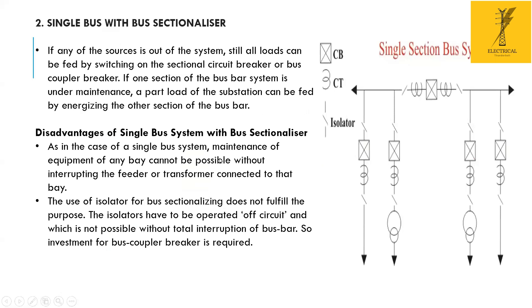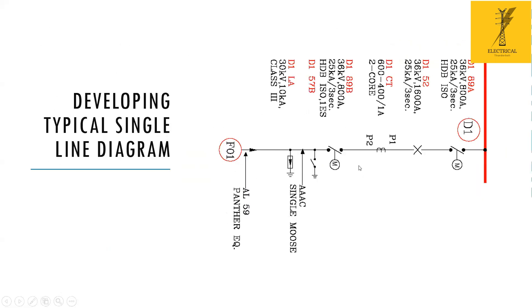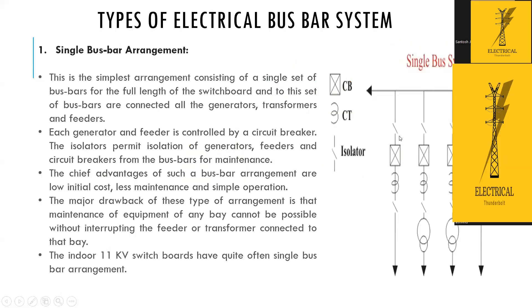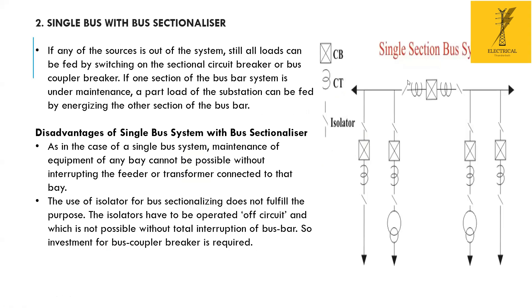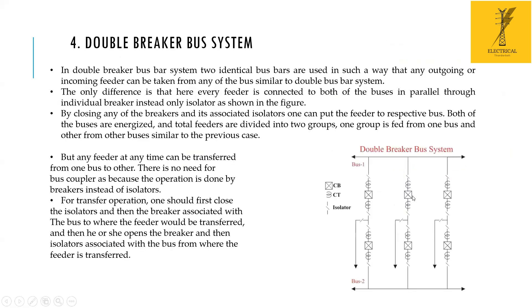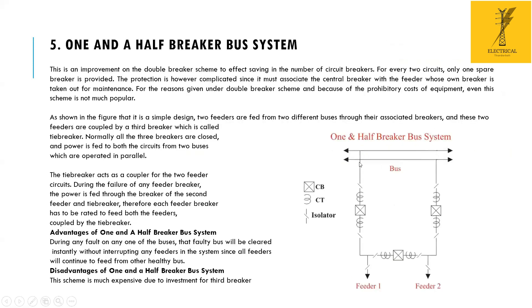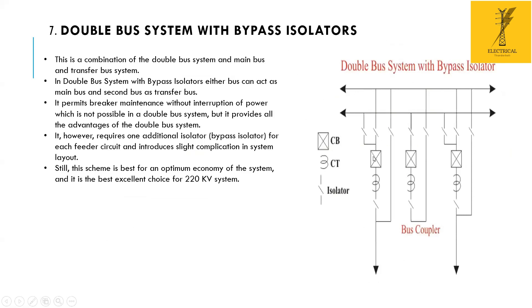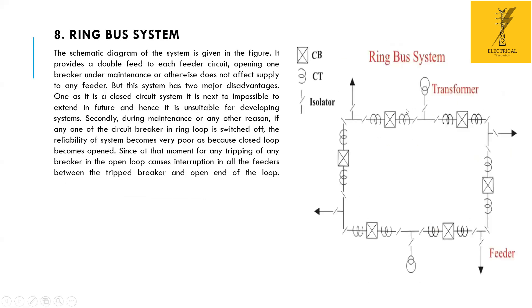So this is a single bus scheme, this is the single bus with sectionalizer scheme, this is the double bus with bus coupler scheme, this is the double breaker scheme. This is the end-of-breaker scheme — it is a rarely used one. This is the double bus system with bypass isolator, another scheme which is also very commonly used. And this is a ring main scheme.